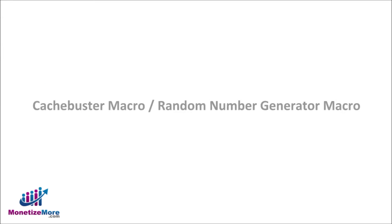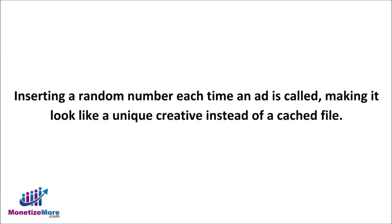Next up is the CacheBuster Macro, also called a Random Number Generator Macro. You may want to prevent a browser from reusing a creative file that's already seen and cached or saved to a memory file. The CacheBuster Macro will simply insert a random number each time the ad is called, making it look like a unique creative instead of a cached file. CacheBuster marketing maximizes your inventory and minimizes discrepancies between you and your advertisers' delivery reports.